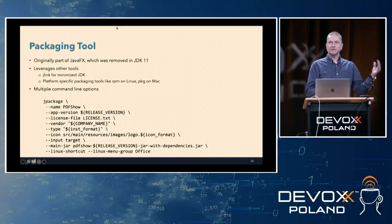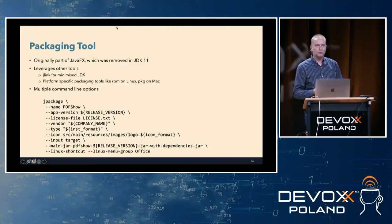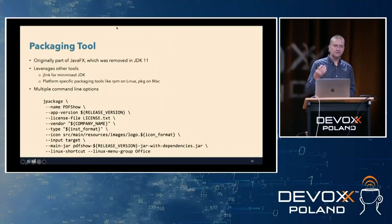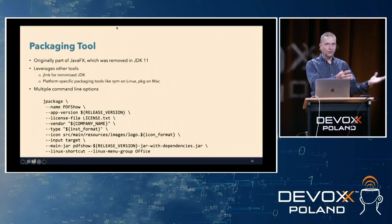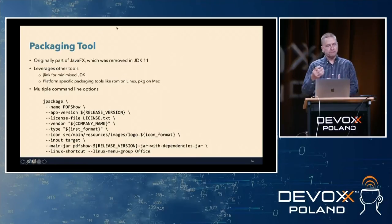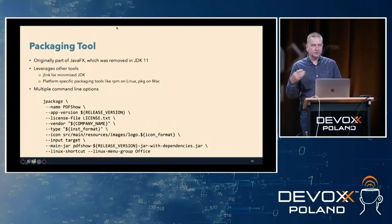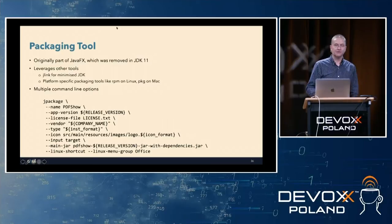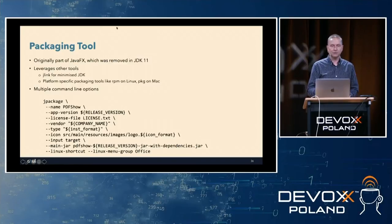From a usage point of view, there are lots of options to specify on the command line. With jpackage you give it a name, a version, a license file, who created it, an icon. You specify the main jar file, a Linux shortcut if you're using Linux, a Linux group for the desktop. It's useful if you're creating applications and want to deploy them and give them to people to install on their machines.